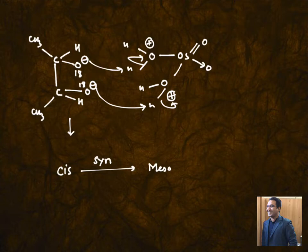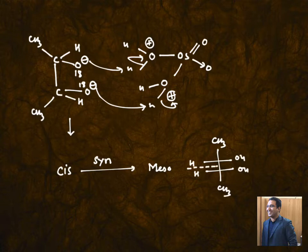So we can expect meso form. Now meso form is optically inactive form which can be drawn in this way: CH3, CH3, H, OH, H, OH. And this Fischer projection shows plane of symmetry, so this is plane of symmetry and we can say this is a meso form.